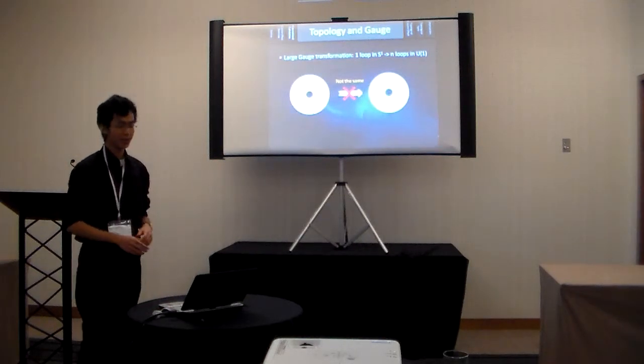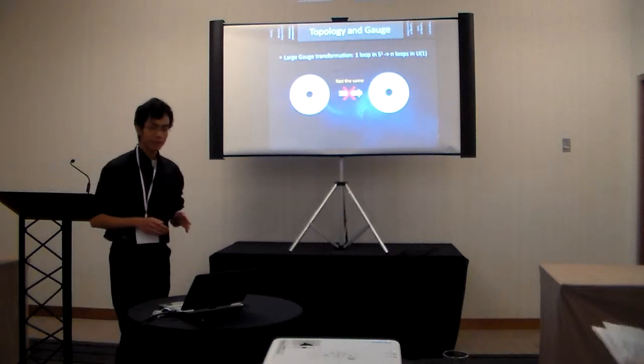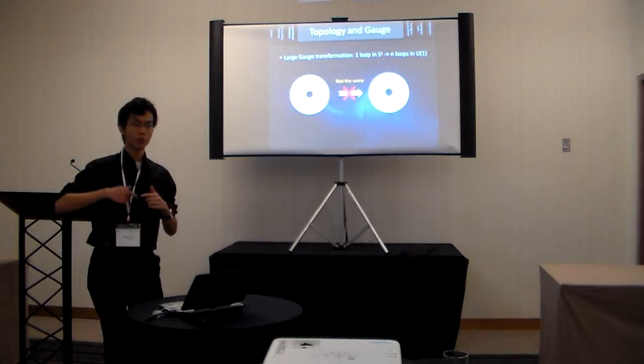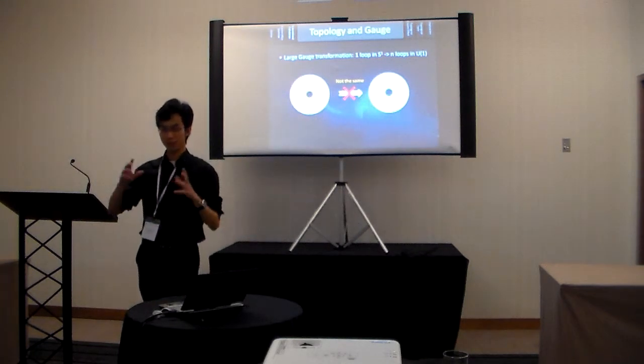So what's happening here is that there is something called a large-gauge transformation. Essentially, these transformations correspond to the mapping such that if I go one loop in my space.